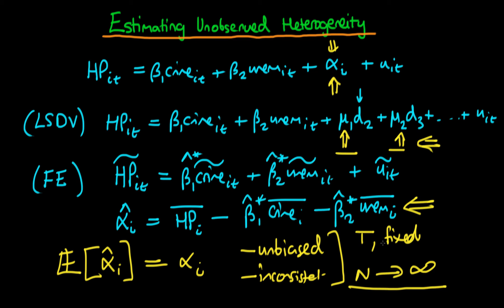If it was the case that we had T going to infinity it would be a different situation. But in the circumstance where we have n going to infinity we have to be careful because our estimator is unbiased but it is inconsistent.